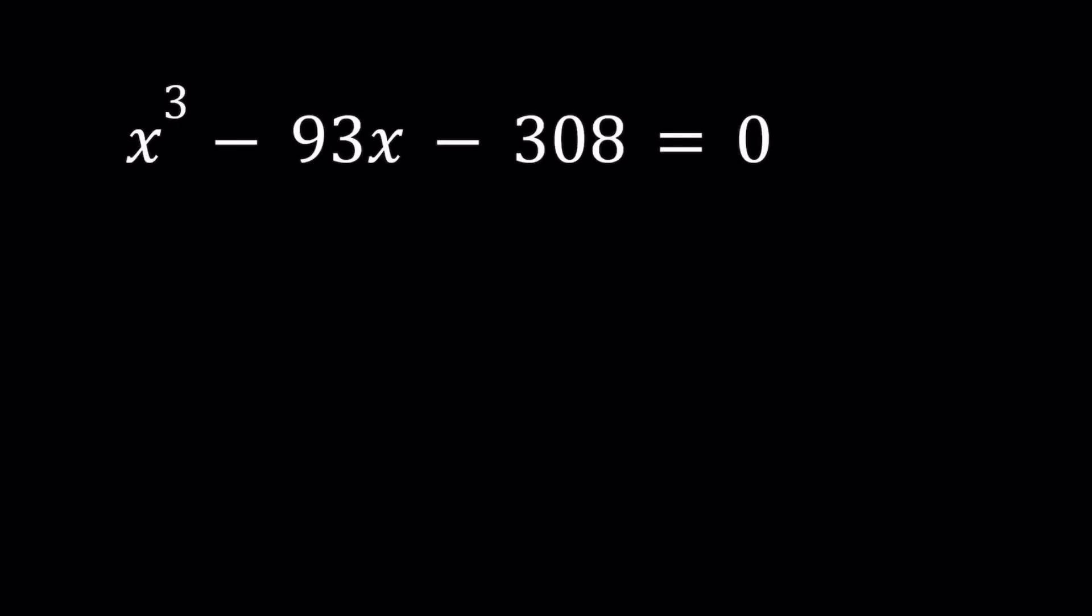Hello everyone. In this video, we're going to be solving an interesting cubic equation. We have x cubed minus 93x minus 308 equals 0, and we're going to be finding the values of x.